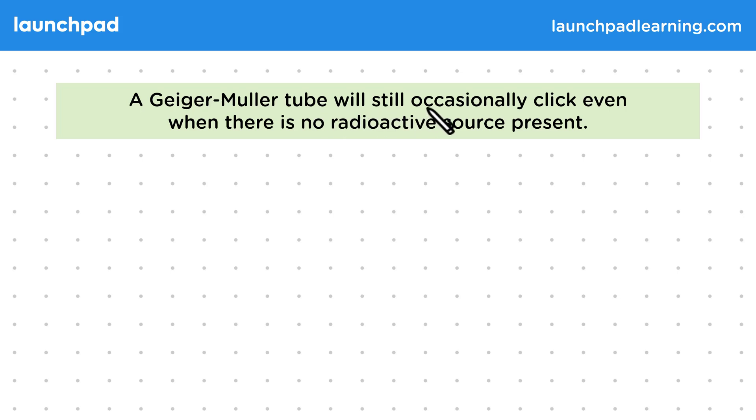A Geiger-Müller tube will still occasionally click even when there's no radioactive source present. Remember, a Geiger-Müller tube is a type of detector used to detect ionising radiation. When no source is present, we still measure infrequent clicks.